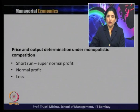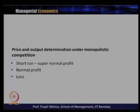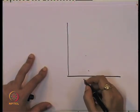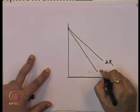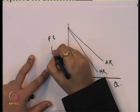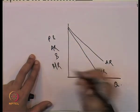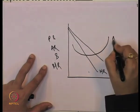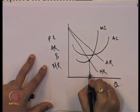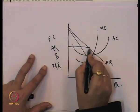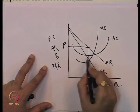In the short run, a monopolistic firm may get super normal profit, normal profit, or incur a loss. This is analyzed based on average cost and average revenue. We identify the profit-maximizing output where marginal cost equals marginal revenue, then identify the price from the demand curve and the cost at the same level. If average revenue is greater than average cost at the profit-maximizing output, the firm earns super normal profit.